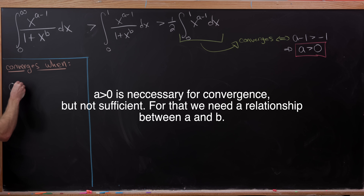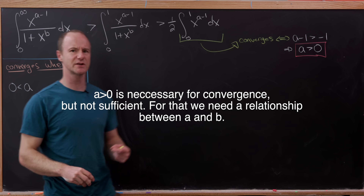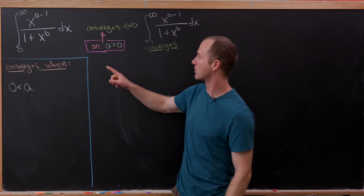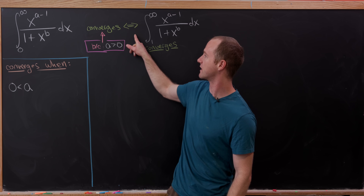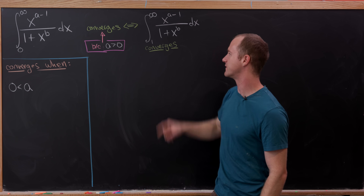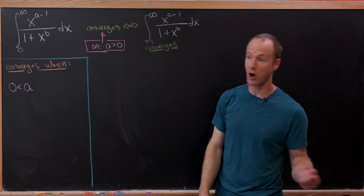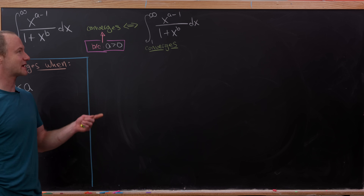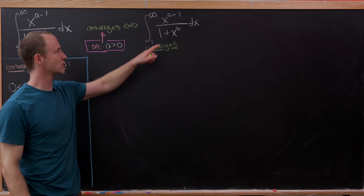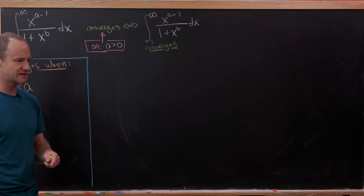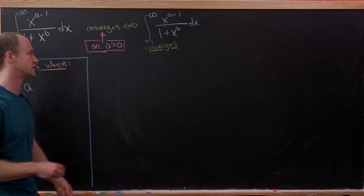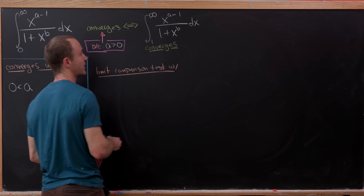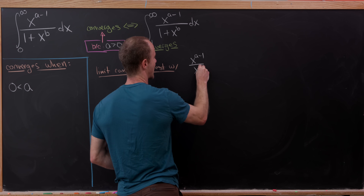So this tells us a must be bigger than 0, but doesn't say anything about the relationship between a and b. We've simplified our convergence problem to asking whether the integral from 1 to infinity converges, since we've already handled the condition near 0. Now we're going to use the limit comparison test between this function and the corresponding function without the 1 — that is, x to the a minus 1 over x to the b.